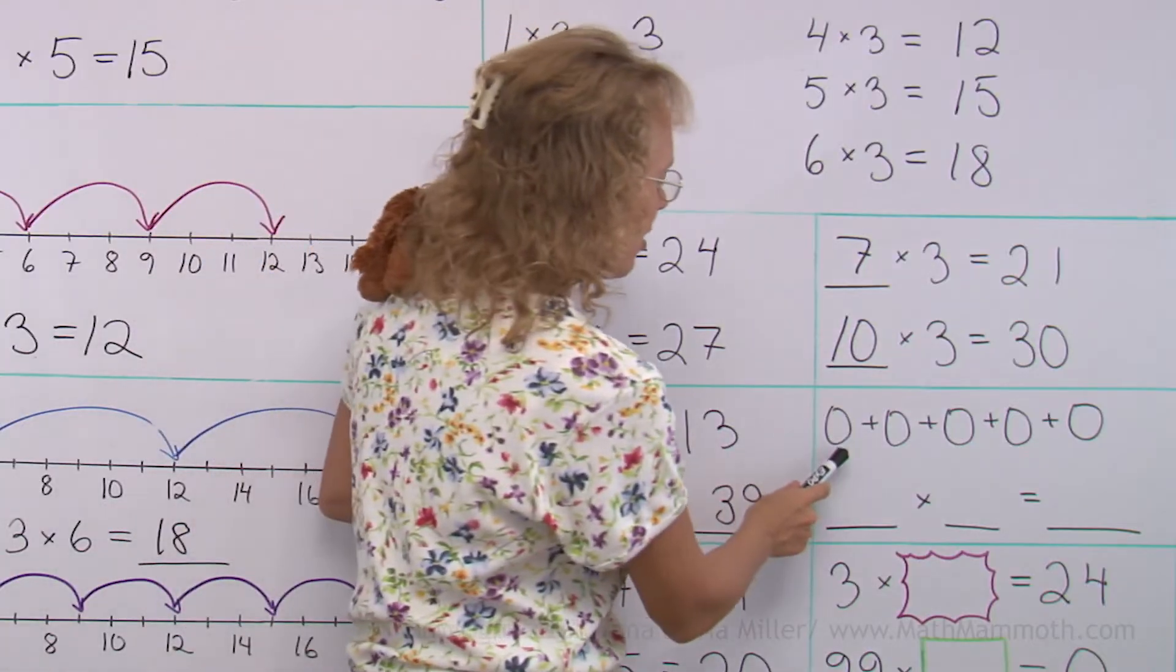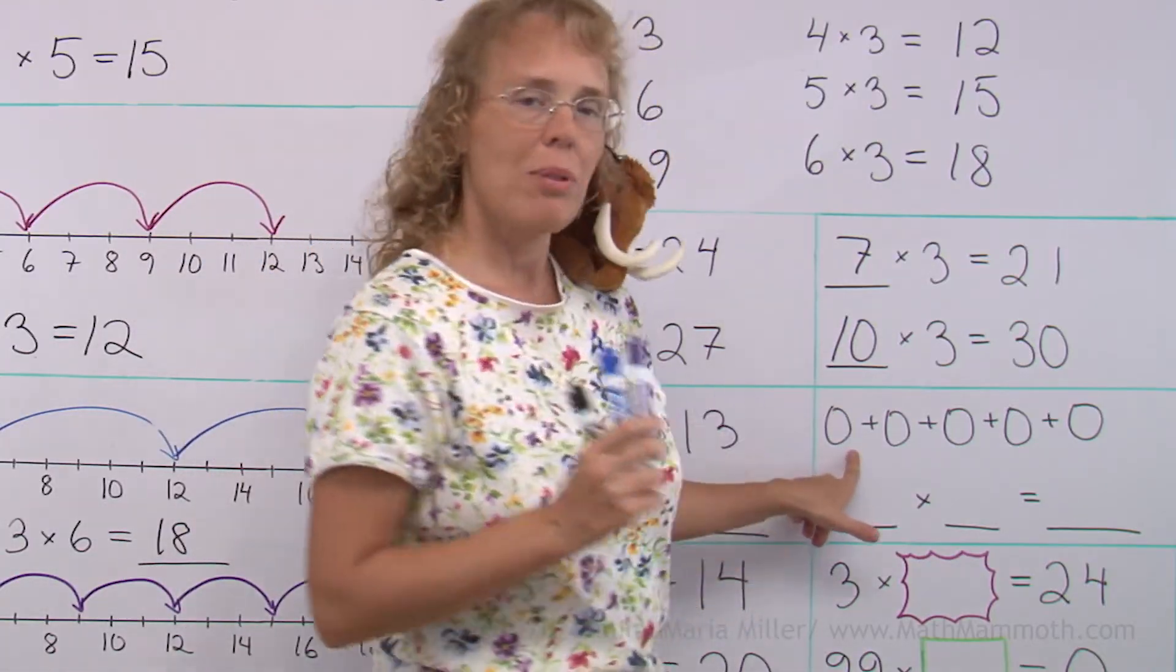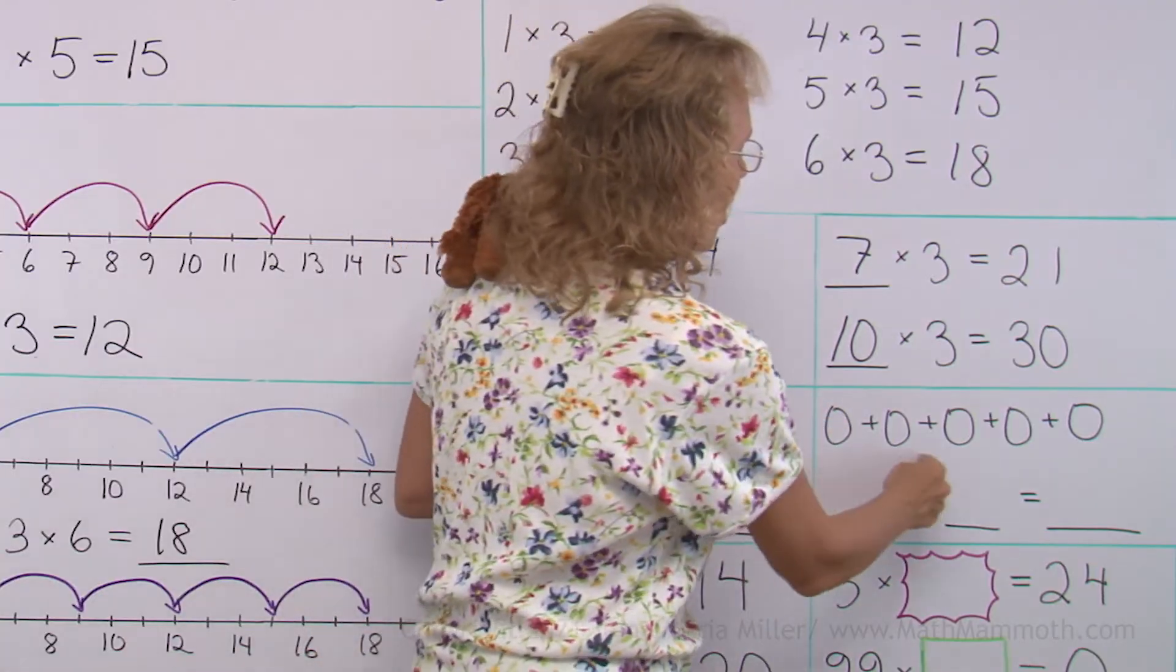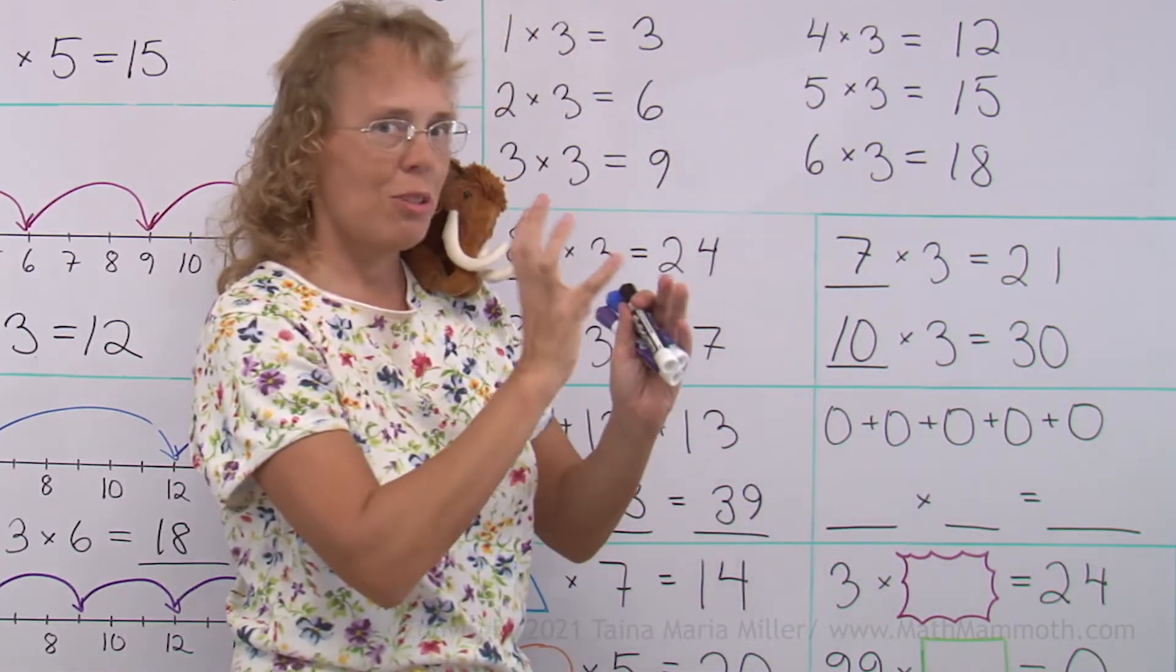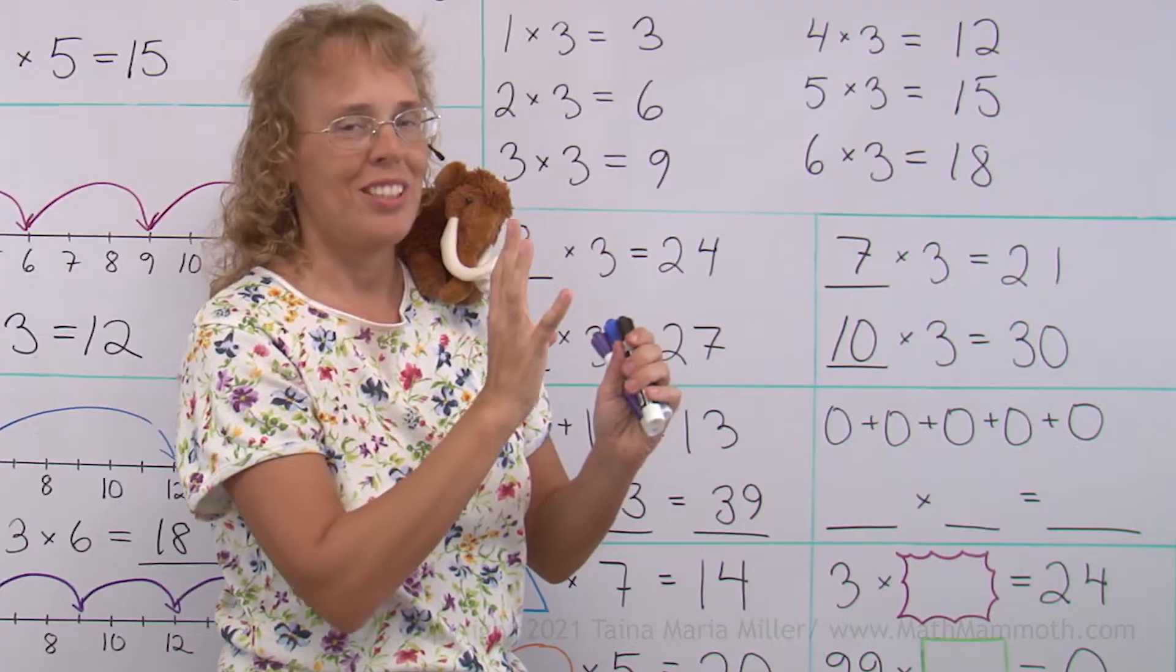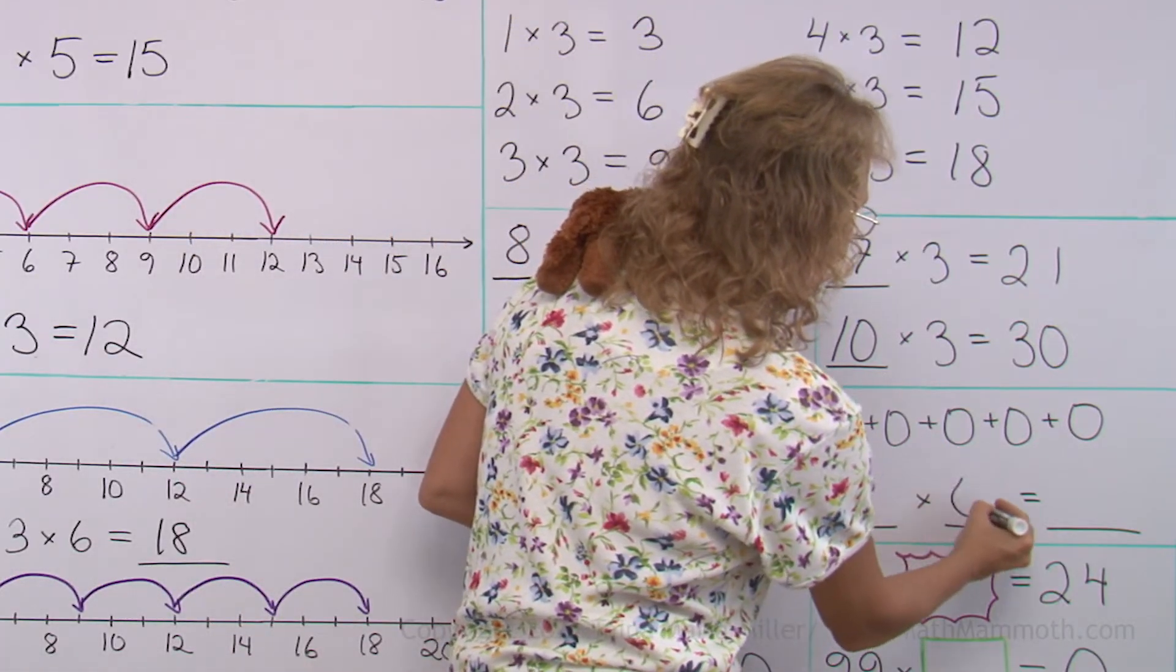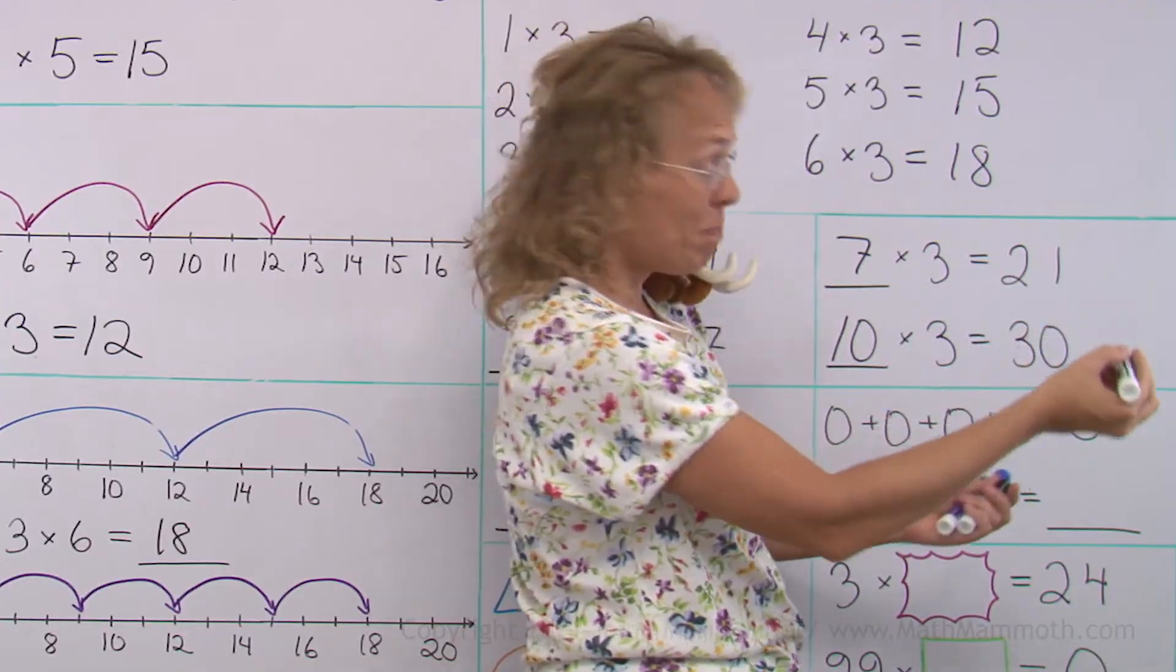Then all these zeros. What multiplication can we write? Imagine this many groups and each one has no marbles or none. So we have five groups, right? Zero in each. And the total is still zero.